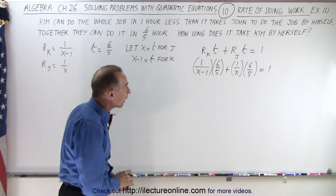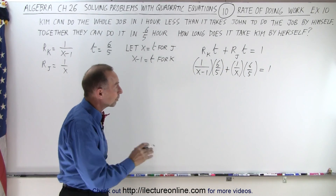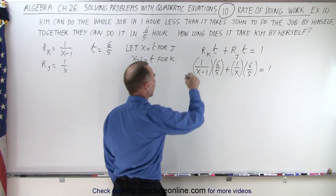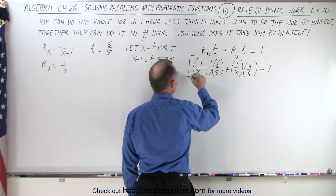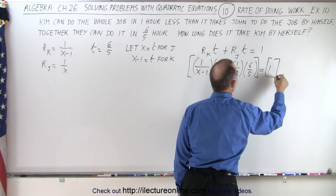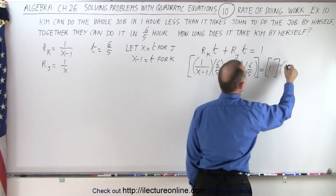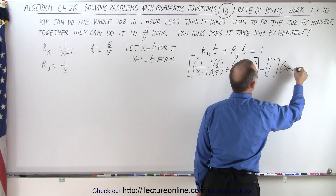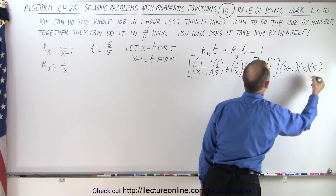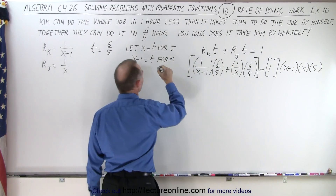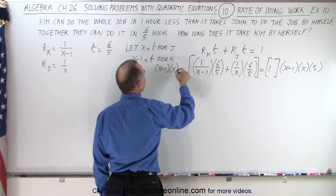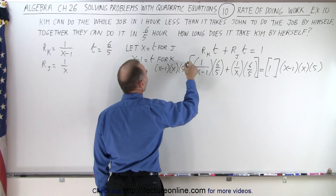To solve that equation, we multiply both sides by the lowest common denominator. The lowest common denominator is going to be the product of all the denominators together, so it's x minus one times x times five, and we do the same on the left side: x minus one times x times five.